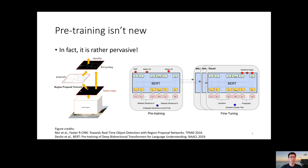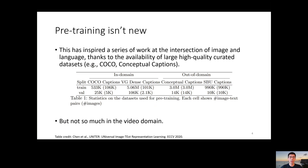All right, let's dive in. Pretraining isn't new. In fact, we have seen rapid progress over the last decade on transfer learning in both the vision domain and language domain. In the vision community, people have been using pre-trained image classification models such as VGG and ResNet for downstream tasks including object detection. And most recently in the language domain, people start to train large-scale language models such as BERT and GPT-3 and transfer them for various downstream tasks. This has inspired serious work at the intersection of image and language, thanks to the availability of high-quality datasets such as COCO and Conceptual Captions.